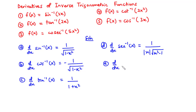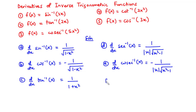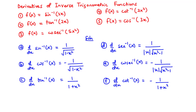E. The derivative of cosecant inverse of x with respect to x is equal to negative 1 over the absolute value of x times the square root of x squared minus 1. F. The derivative of cotangent inverse of x with respect to x is equal to negative 1 over 1 plus x squared. We are going to use the derivatives of these inverse trig functions to solve questions 1 to 5.